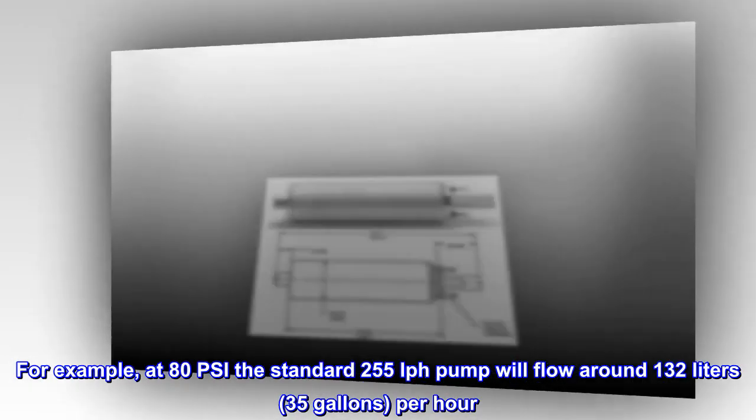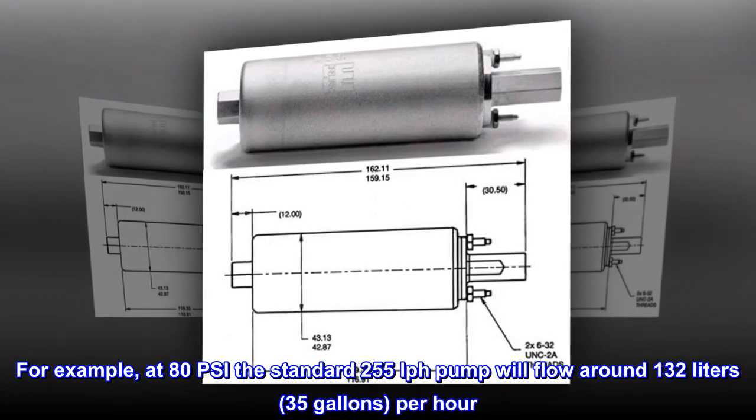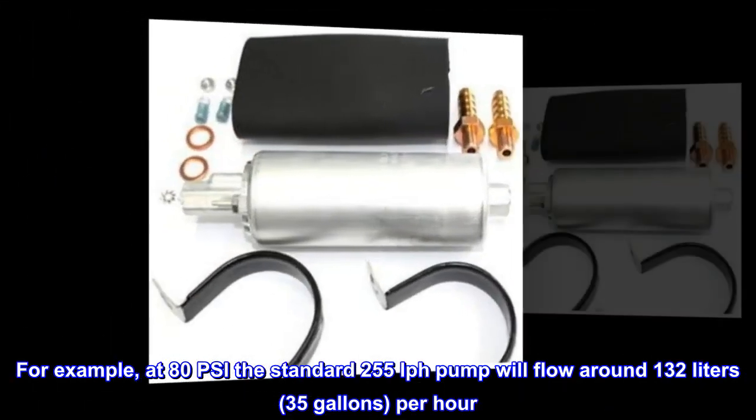For example, at 80 PSI the standard 255 LPH pump will flow around 132 liters, 35 gallons per hour.